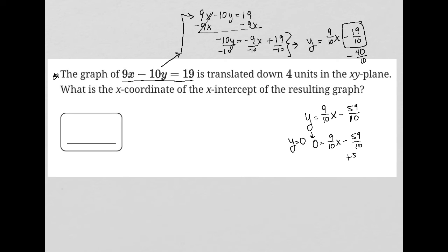I can then add 59/10 to both sides of the equation. It cancels out on the right side. So now I have 59/10 equals 9/10 x.